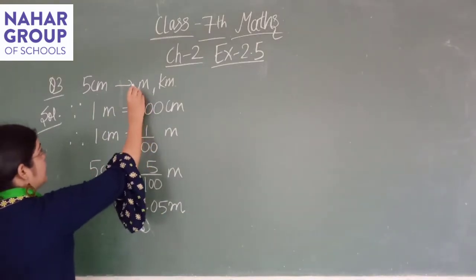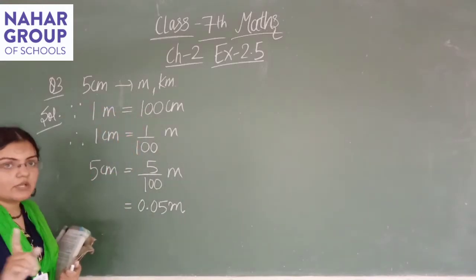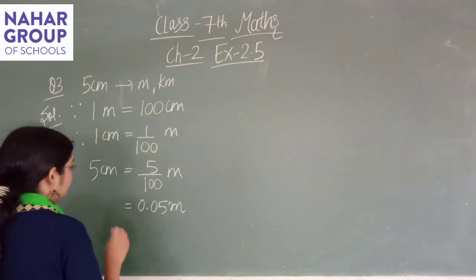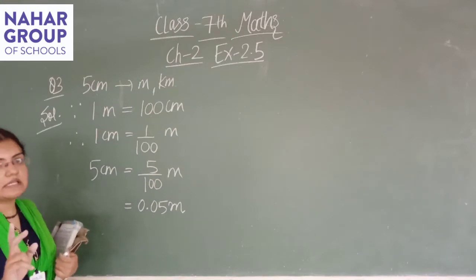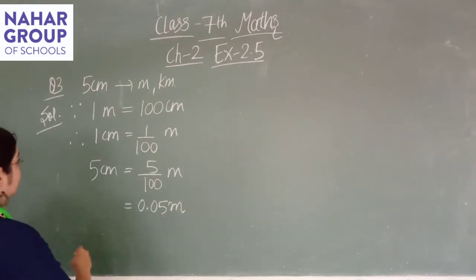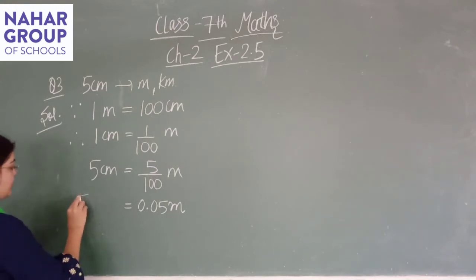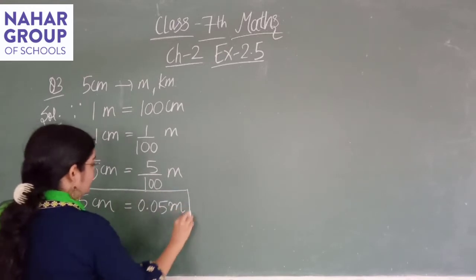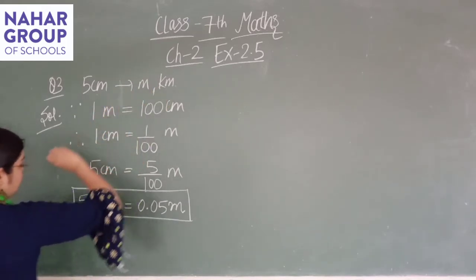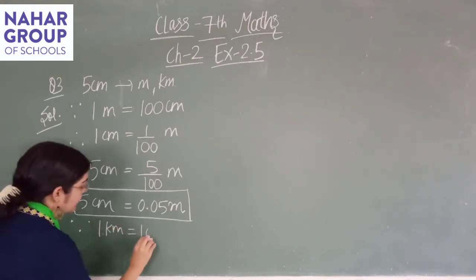अब इसके बाद इसी को kilometer में भी करना है। Direct cm से km में convert करने की कोई unit नहीं है — direct आप cm से km में नहीं कर सकते। तो हमने meter में कर लिया है, और meter और km के बीच एक relation है: 1 km equals to 1000 meter। So अब km में convert करने के लिए, since 1 km equals to 1000 meter।